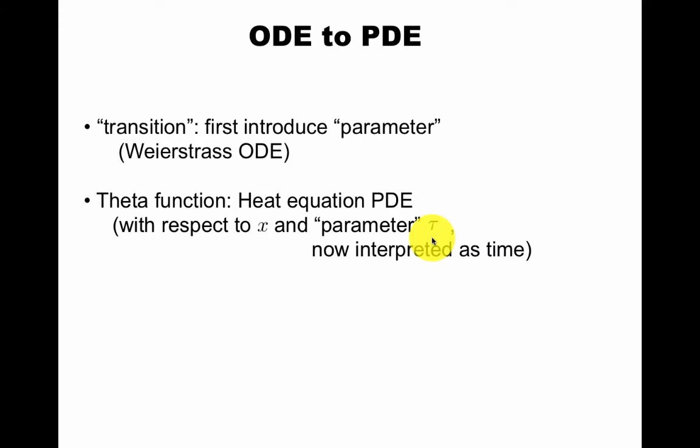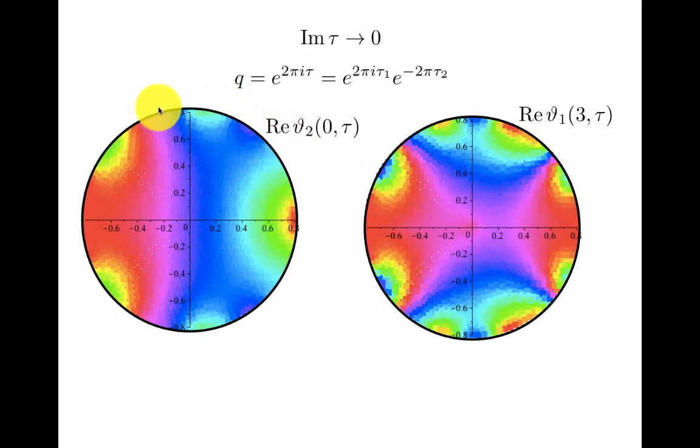There should be a delta function from the theta function, but in fact it depends which direction the τ goes to zero. So if the imaginary part of τ goes to zero, then this variable q here goes to one, and that's captured by the boundary of this disk. The coloring here shows you that depending on which direction you go in, you will get different answers, whether it's infinity or zero.